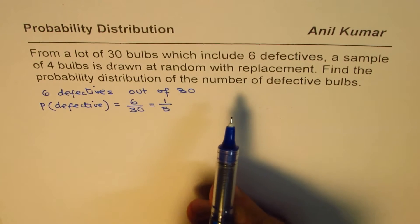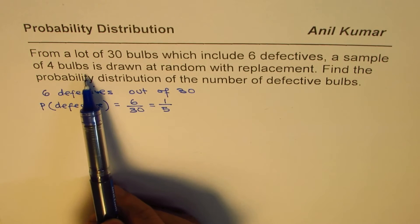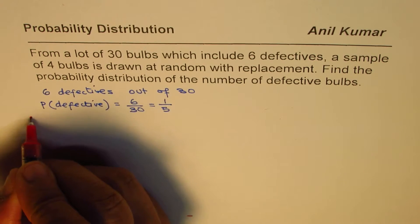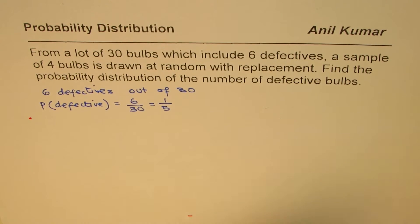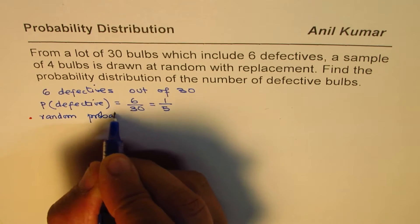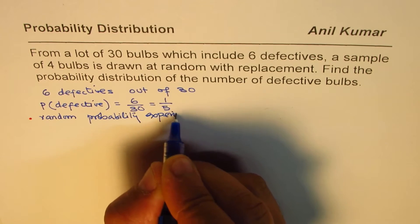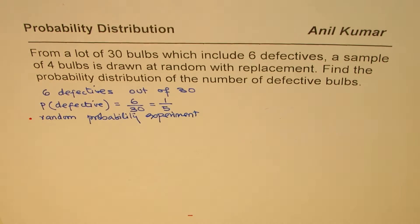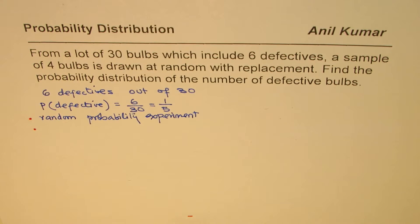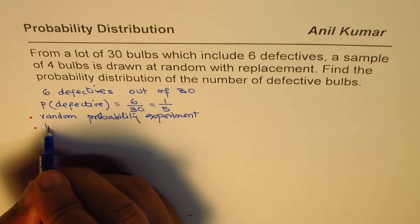In our experiment, we are drawing a sample of 4 bulbs at random with replacement. This means we have a random probability experiment in which, since we are replacing each trial, each trial is an independent trial.